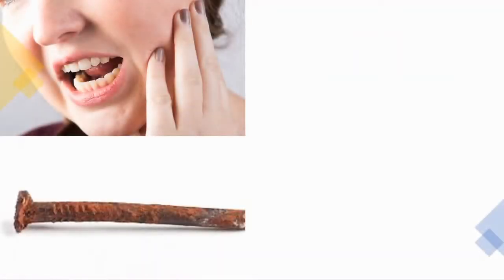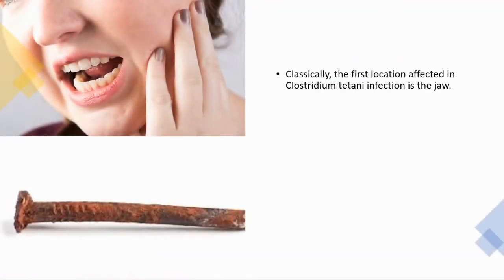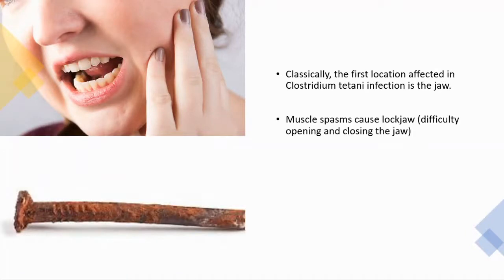Generally, the first location affected in Clostridium tetani infection is the jaw. Muscle spasms cause lockjaw, which means difficulty opening and closing the jaw. After infection, we generally see spastic paralysis. These spores are found in rusty nails.